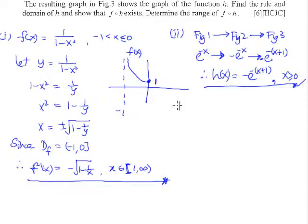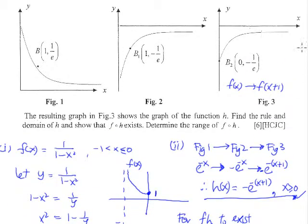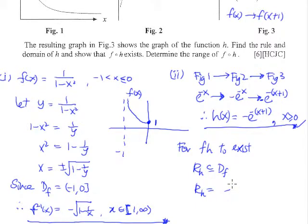For the last part, we need to write the condition: for f of h to exist, the range of h must be a subset of or equal to the domain of f. The first thing we need to figure out is the range of h. From the diagram, it is rather obvious that the range of h(x) will be from negative 1 over e to 0, excluding 0 because the x-axis is the asymptote, and including negative 1 over e because x can equal 0.